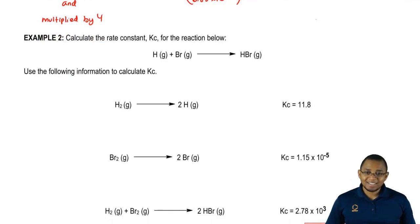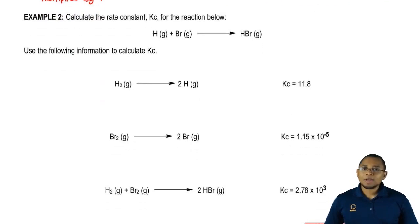Here, this one's a lot more complicated. What we're going to say here is we need to find the K value, Kc value for this equation here. We're going to call this Kc4. This will be Kc1, 2, and 3.